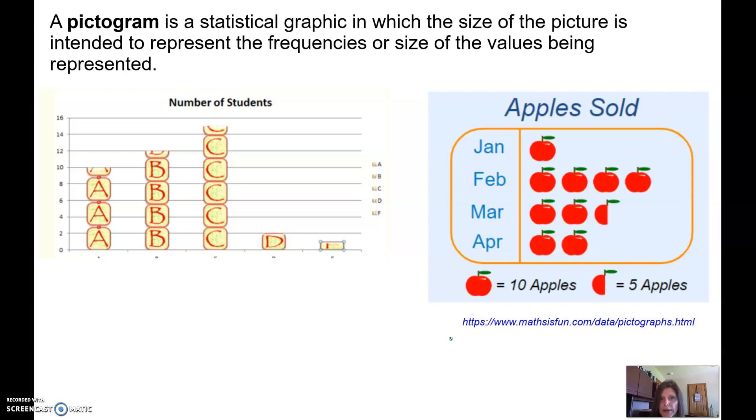The first is something called a pictogram and you might be looking at these images and saying well it kind of looks like a bar chart. Yes it does but there are some differences. First off instead of just a straight bar we have pictures, we have images, usually we try to make them related to the data that we're looking at. So the first one is pretty much like a bar graph except the bar itself is made up of letter blocks to represent the letter. We still have the frequency on the vertical column and the category on the horizontal axis.